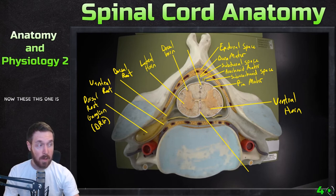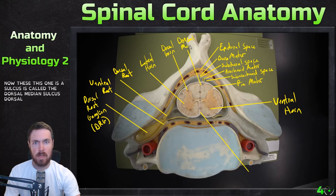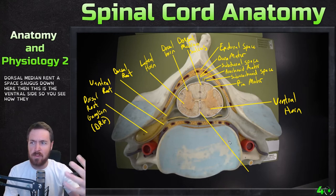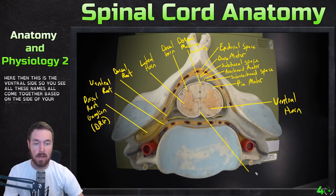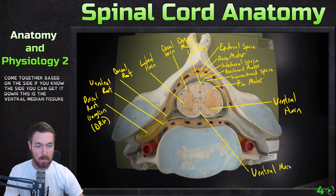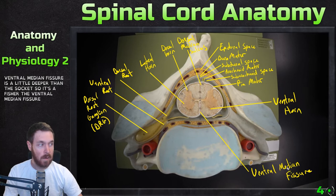This one is called the dorsal median sulcus. Then on the ventral side — you see how these names all come together based on the side; if you know the side you can get it down — this is the ventral median fissure. It's a little deeper than the sulcus, so it's a fissure.